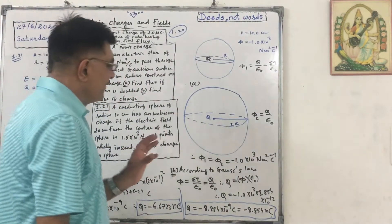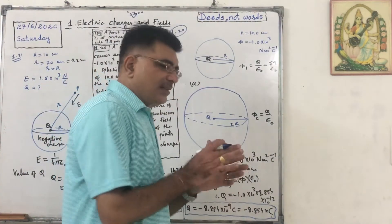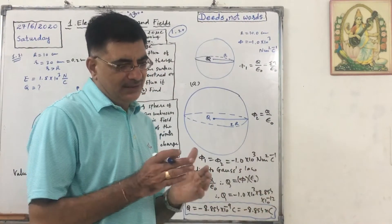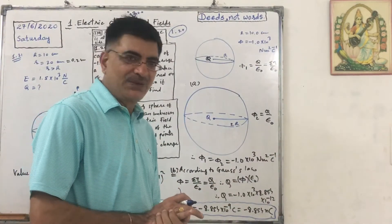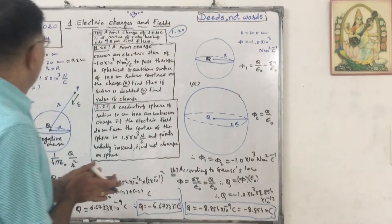In short, if charge is same it doesn't matter what is the radius of the sphere, flux will remain same. Now 1.21.